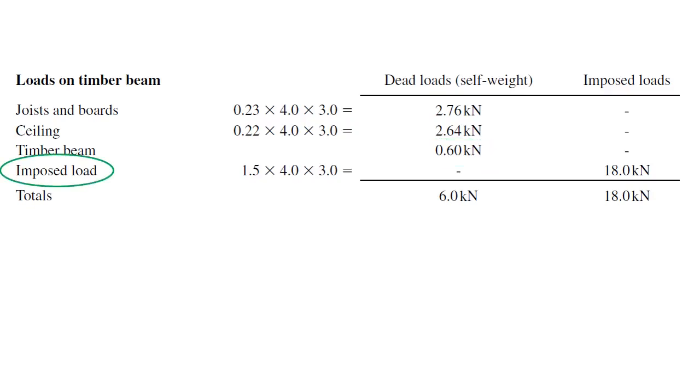Next, we have to find imposed load. This 1.5 is the value of imposed load on floor, which is given in the design data. This is the shaded area. Once we multiply these three values, we can get 18 kN.